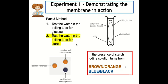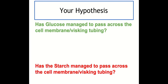Before we look at the results, think about what you predict would have happened — this is what we call a hypothesis. Do you think glucose would manage to pass across the cell membrane? Do you think starch managed to cross the visking tubing membrane? Pause the video and have a think.